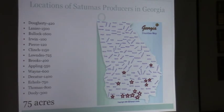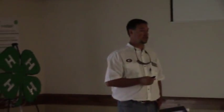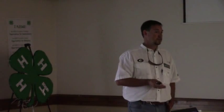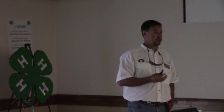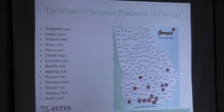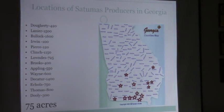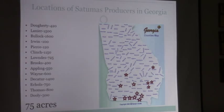That equates to about 75 acres of Satsumas. Most of those have been put in since 2013, so a lot of the trees are fairly new, not producing yet. Hopefully in two to three more years we should have some production going on, depending on the size of tree you start with. I calculated this by adding up the number of trees and dividing by 140, which is the average trees per acre.